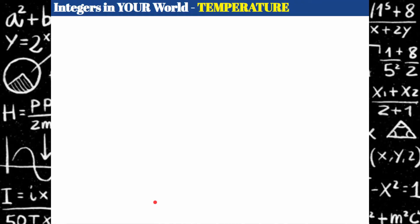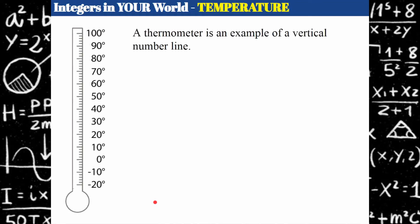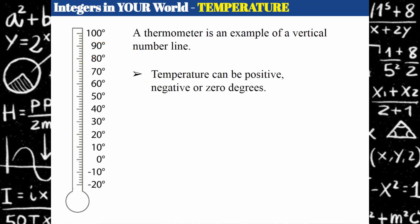Let's talk about integers in your world. Temperature is a place where integers exist. Think of a thermometer as a vertical number line. We have zero degrees, and then going up shows our temperature increasing or rising. Below zero are our negative temperatures — when it goes below zero it's very cold. Freezing is at 32 degrees on a Fahrenheit thermometer. A hundred or ninety degrees is a very hot summer day. So we can talk about temperature being positive, negative, or zero degrees.